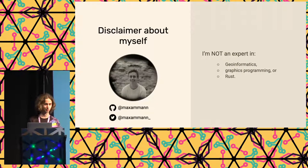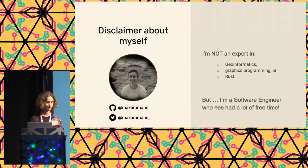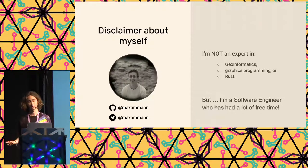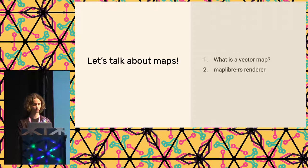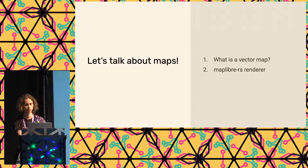A short disclaimer about myself: I'm not really an expert in all of this, I just had a lot of free time. I'm basically a software engineer, but I'm not really a Geoinformatics guy, or Graphics Programming, or even a Rust guy. I kind of just started to learn all of this with this project. In the beginning I want to talk about what actually a vector map is, and later I want to present MapLibre RS, which is this renderer I've been working on.